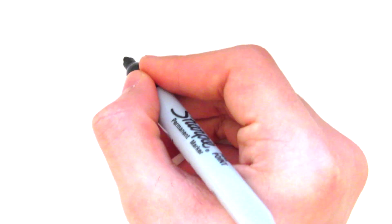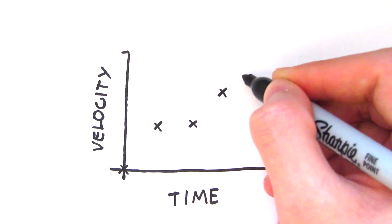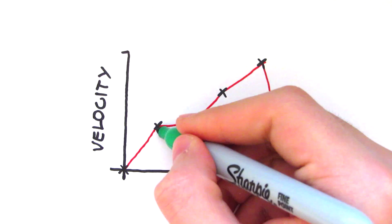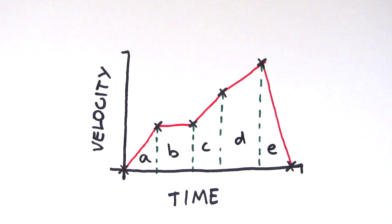You can also find the distance you've travelled by working out the area under the graph. It's as easy as working out the areas of squares, triangles and trapeziums, and hence how far you've travelled.